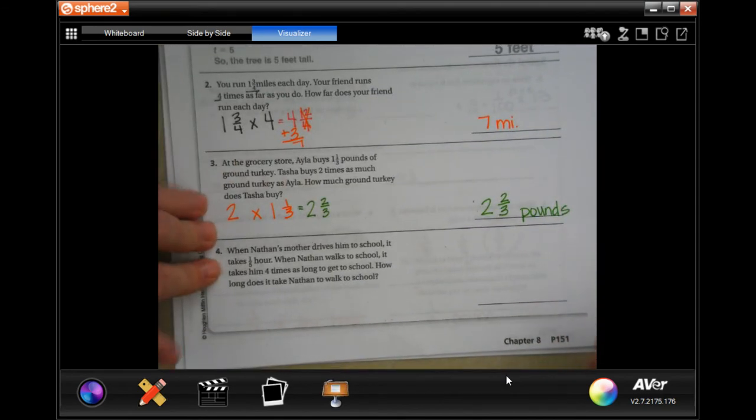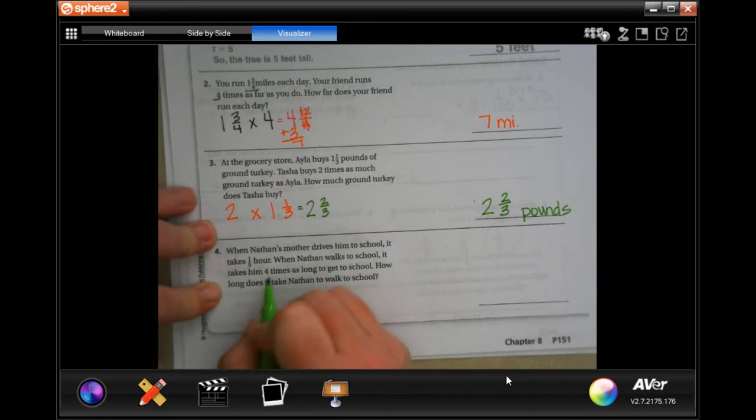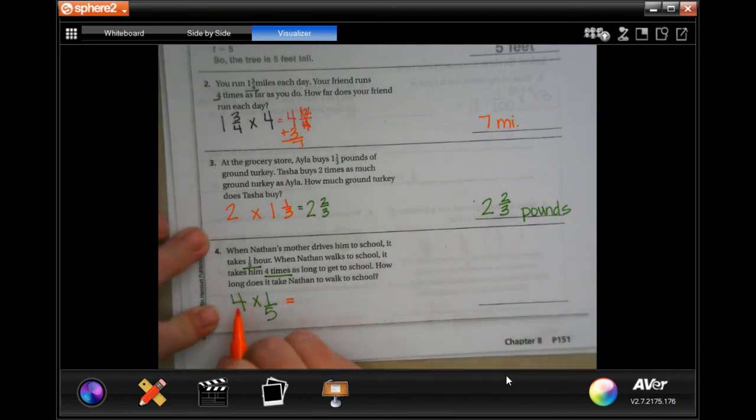The last one is going to be four times one-fifth. So, this one is just going to wind up being four times one.